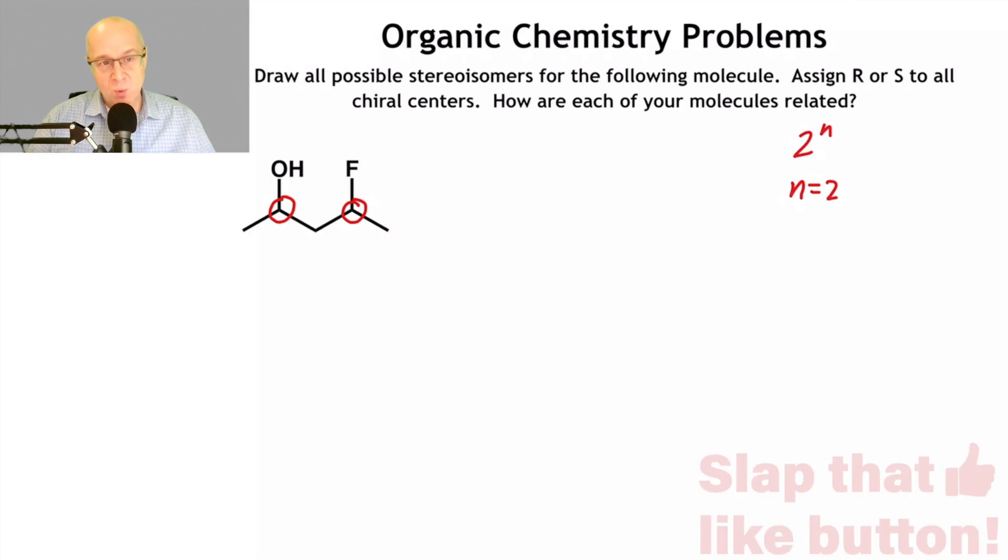If N were 1, the possibility is you could have two stereoisomers, R and S, the enantiomers. If you have two stereocenters, you have a probability of having four stereoisomers, two sets of enantiomers in other words. So 2 to the N equals 2 to the 2 equals 4. There's going to be four different drawings I have to make.